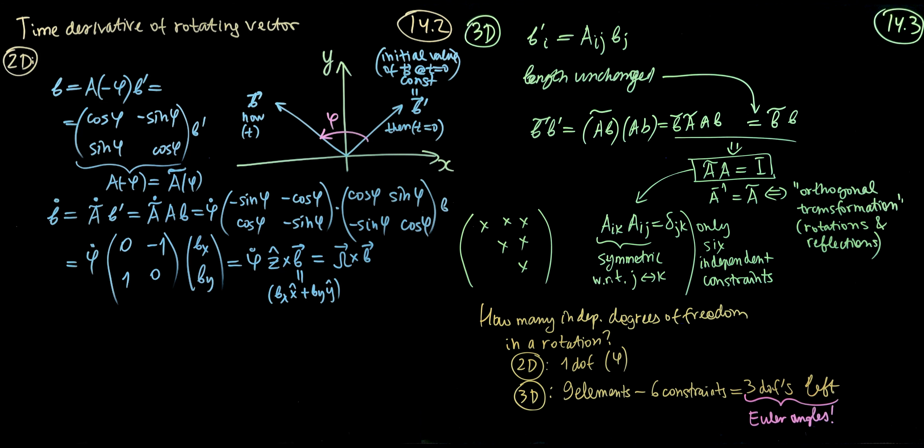These six independent constraints tell us how many degrees of freedom we have when specifying a rotation. In 2D, there is only one degree of freedom: phi. In 3D, the rotational matrix has nine elements but six independent constraints, leaving three degrees of freedom in a 3D rotation.